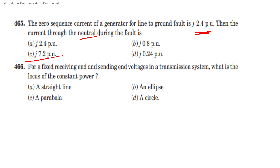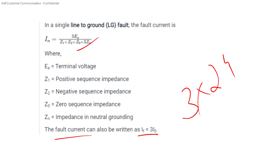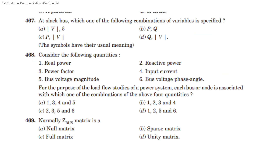Question 4: For a fixed receiving end and sending end voltage in a transmission system, what is the locus of constant power? The constant power locus is a straight line. At the slack bus, which combination of variables is specified? In the slack bus, there is magnitude and power angle. Consider the following quantities: real power, reactive power, power factor, input current, bus voltage magnitude, bus voltage phase angle.